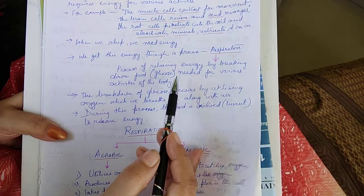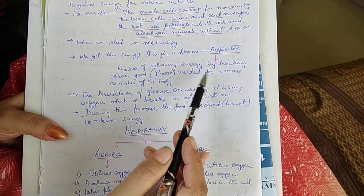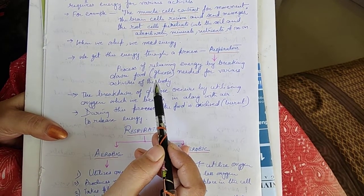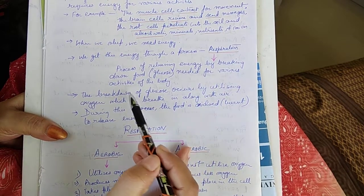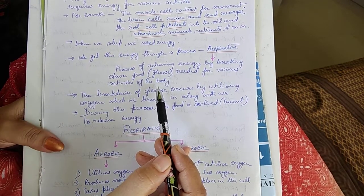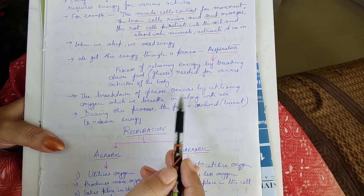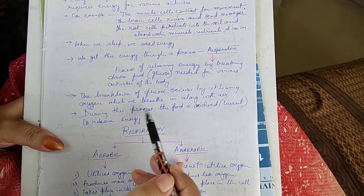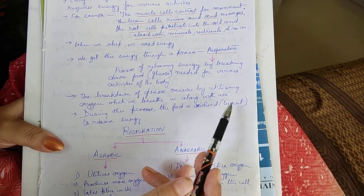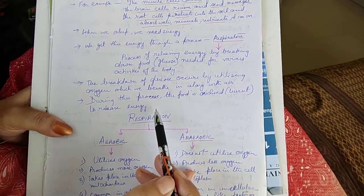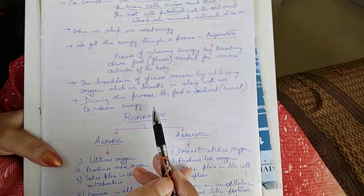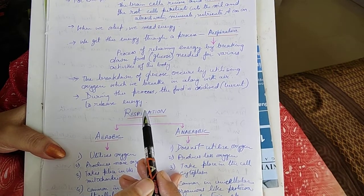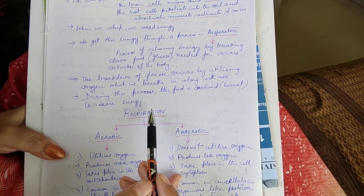What is respiration? It is the process of releasing energy by breaking down food, that is glucose, which is needed for various activities of the body. The breakdown of glucose occurs by utilizing oxygen, which we breathe in along with air. During this process, the food is oxidized or burned to release energy.